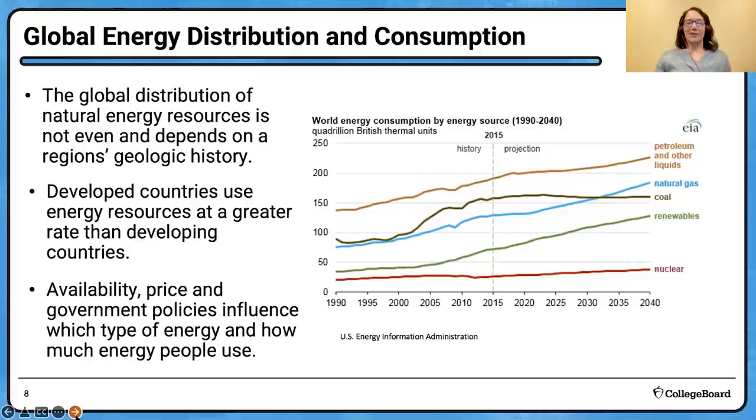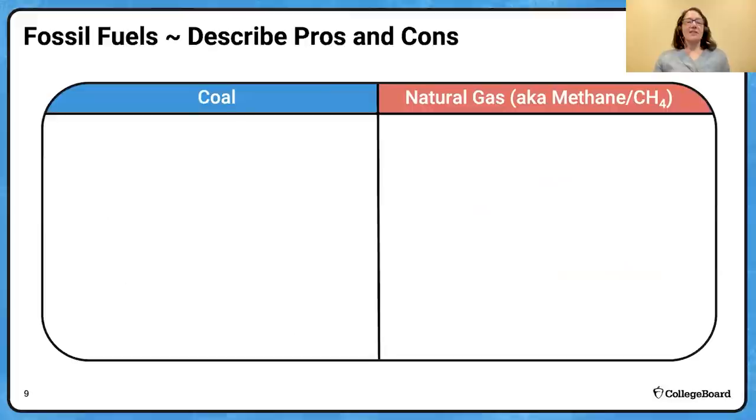Let's see if we can look at this diagram that shows world energy consumption by source over the last few decades. Notice that the unit is measured in quadrillion British thermal units. There's a lot of different units that we might see in energy concepts, and don't let those units distract you. If you would ever have to convert from one energy unit to another, that conversion factor would be given to you. What I really just want to focus on here is trends over time. Generally I can see that natural gas use has increased globally and is projected to keep increasing. Coal use has started to dip a little bit. And nuclear seems like kind of a flat line.